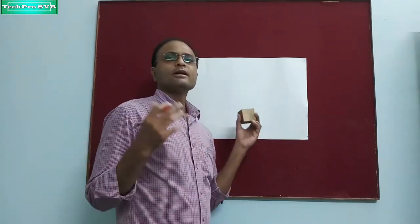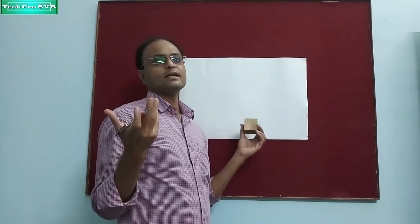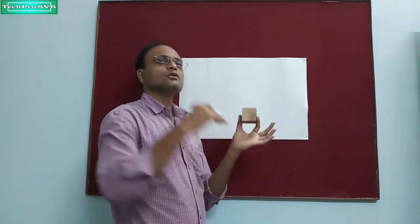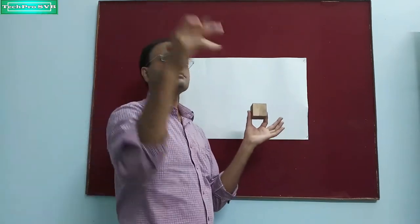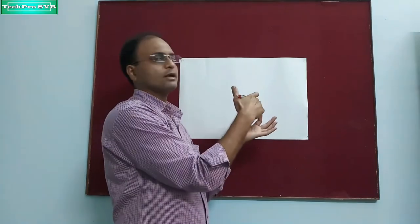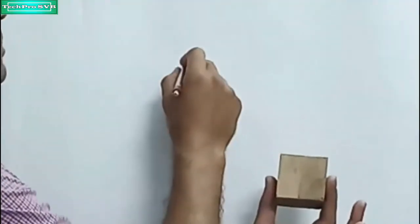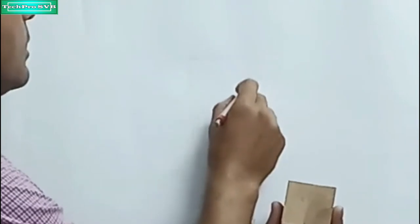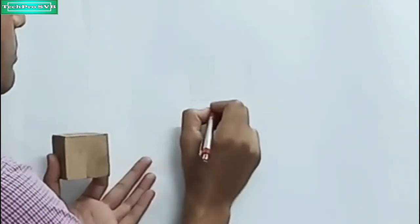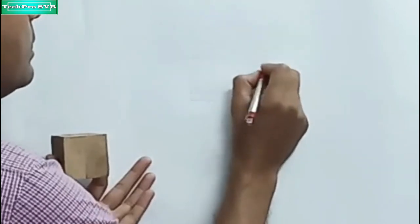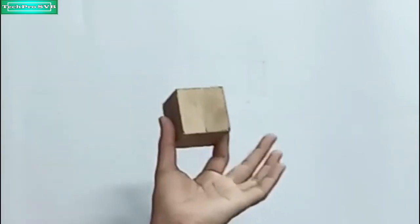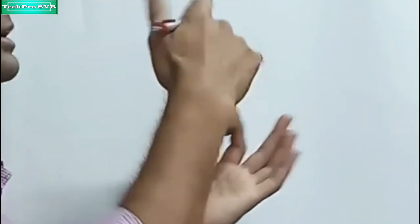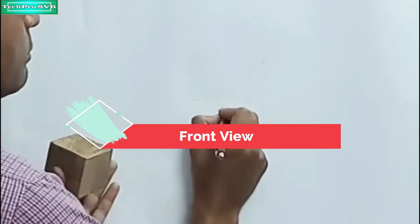Now let me introduce the concept of front view, top view, and side view. When we are looking at this object from the front, the image obtained on the plane surface will be in the form of a rectangle, where one dimension will be equal to L (length) and the other will be equal to the height. This projection, obtained when we look at the object from the front, is called the front view.